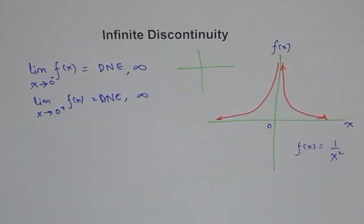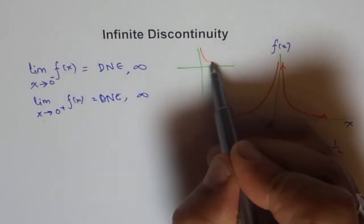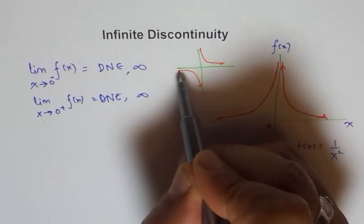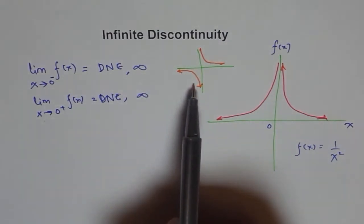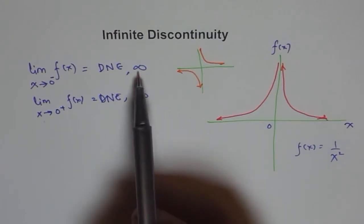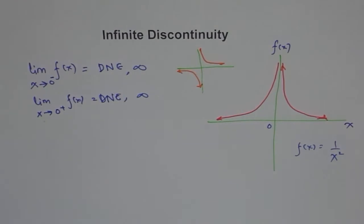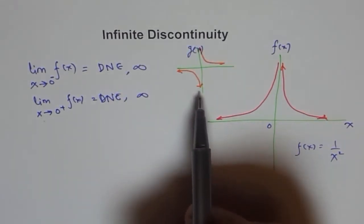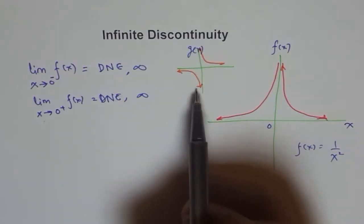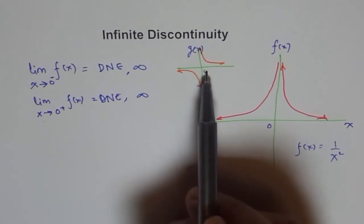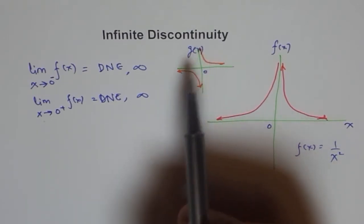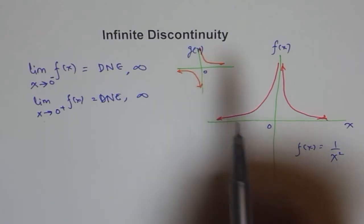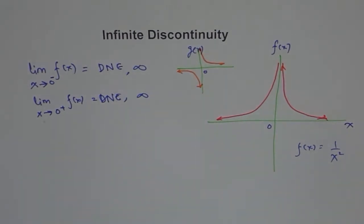We could have a function like 1 over x — you remember 1 over x. Here, you see, it is approaching different sides. When I approach from the negative side, it leads towards negative infinity. Let's call this function g(x). In the case of g(x) also, we have infinite discontinuity. The function approaches infinity towards opposite ends — from the negative side we get negative infinity, and when we approach 0 from the positive side, it leads to positive infinity. So the limit doesn't exist, and the function is discontinuous at x equals 0. This type of discontinuity is called infinite discontinuity.